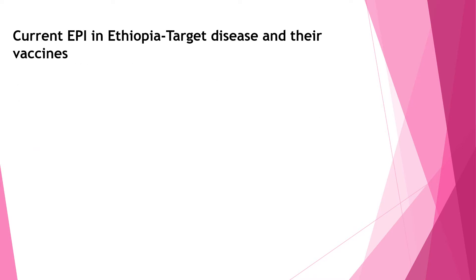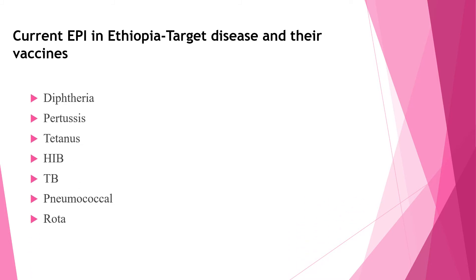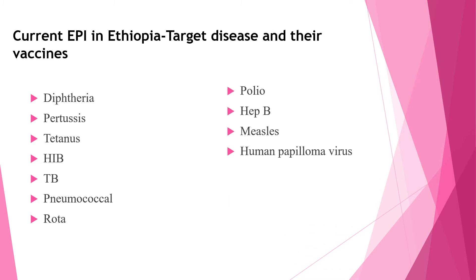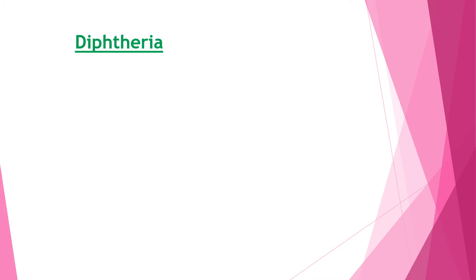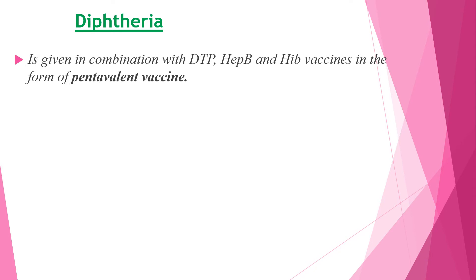When we see the current EPI in Ethiopia and their target diseases and vaccines for children, currently diphtheria, pertussis, tetanus, Hemophilus influenzae type b, tuberculosis, pneumococcal, rota, polio, hepatitis B, measles, and human papillomavirus are given for children. Diphtheria is given in combination with tetanus and pertussis and also Hemophilus influenzae type b and hepatitis B in the form of pentavalent vaccine.